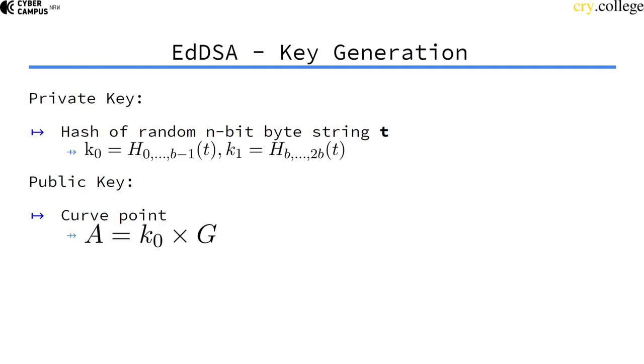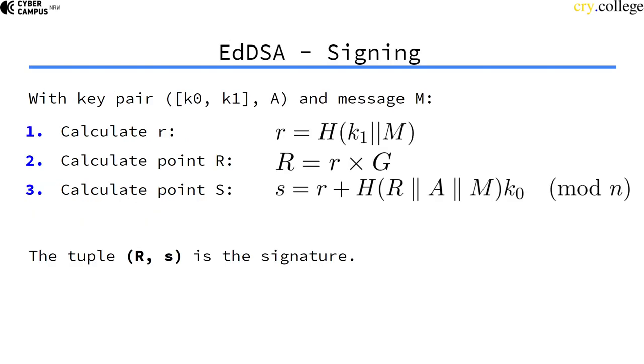And there's a public key, and the public key is K0 times the standardized generator. So the key pair is K0 and K1 as private key, and A as public key.